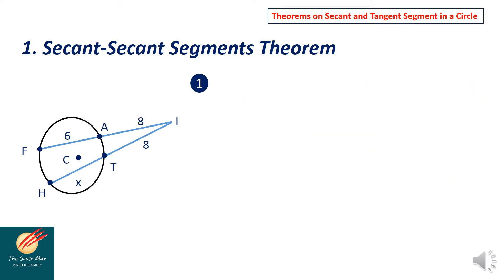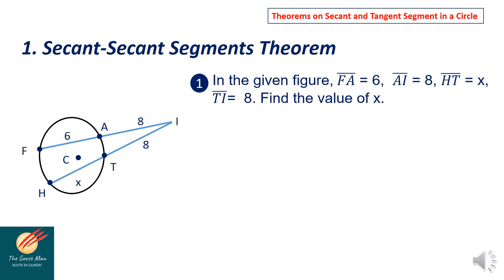Let's begin with this word problem. In the given figure, FA is equal to 6, AI is equal to 8, HT is unknown, and TI is equal to 8. Find the value of X.